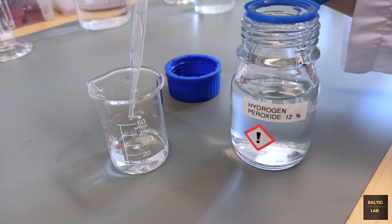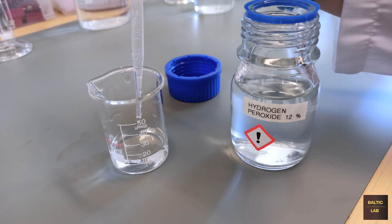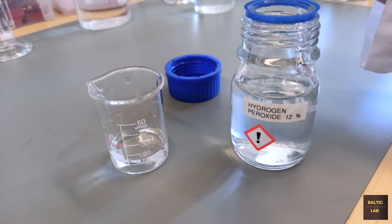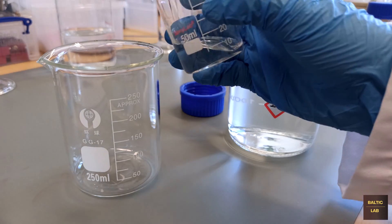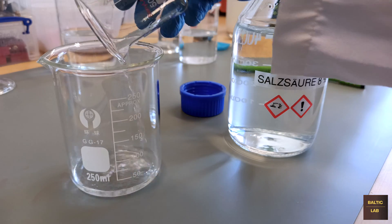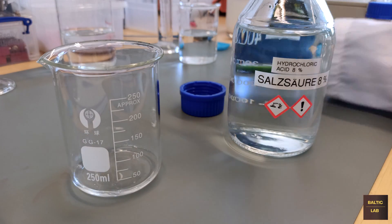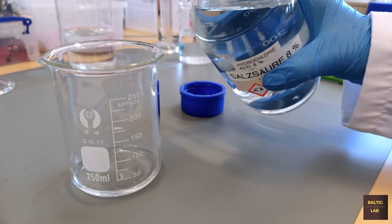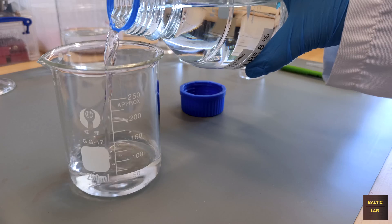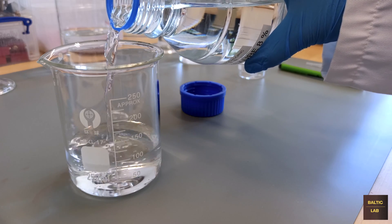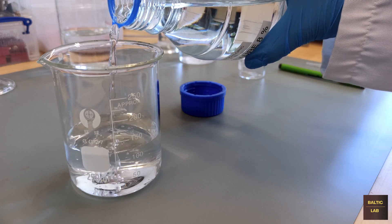To prepare the etchant, one part of a 12% hydrogen peroxide solution and nine parts of an 8% hydrochloric acid solution are combined. In this example, 15 milliliters of the 12% hydrogen peroxide and 135 milliliters of 8% hydrochloric acid are mixed to yield a total of 150 milliliters of ready-to-use etchant.